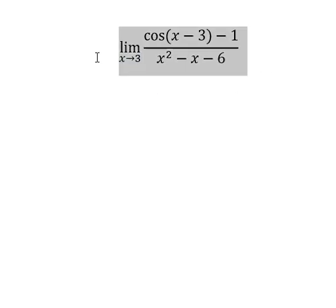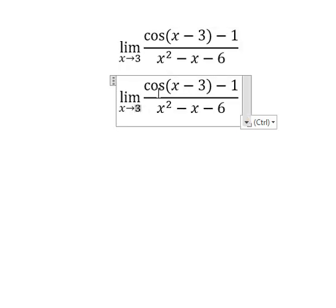Let me show you how to answer this. When we plug in x equals 3 here, here, and here, cosine of zero gives us 1. One minus one equals zero. The denominator also equals zero. So we have zero over zero.